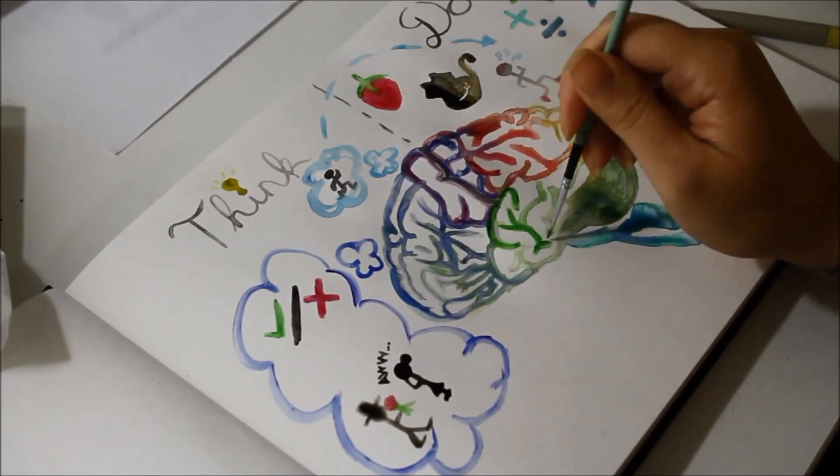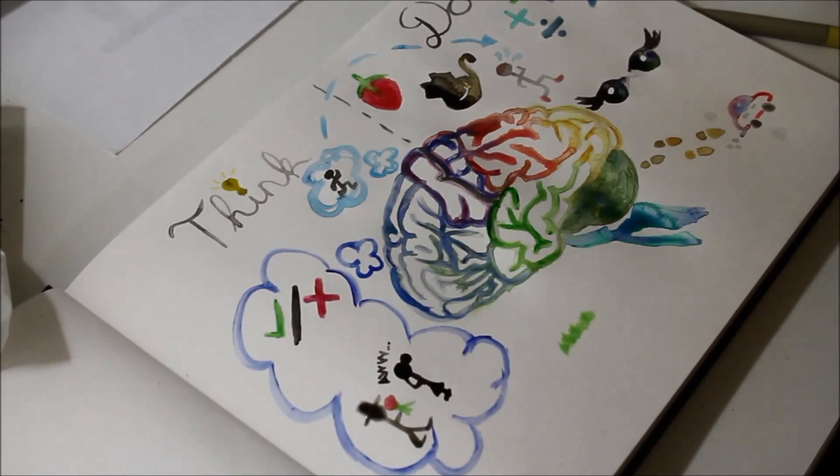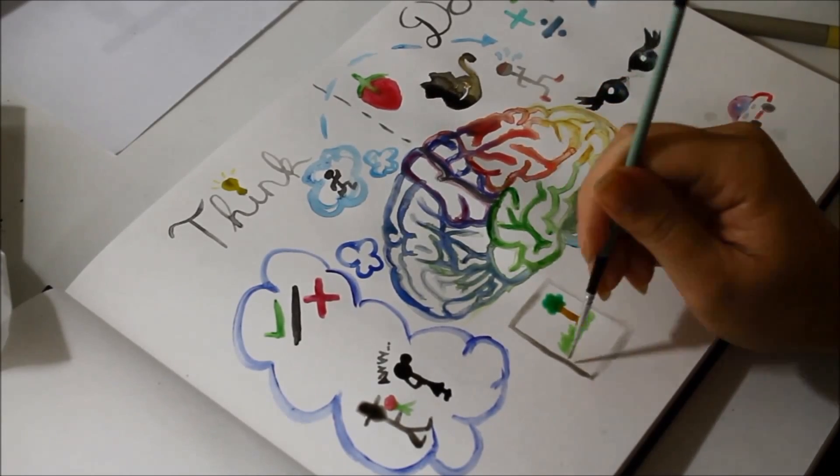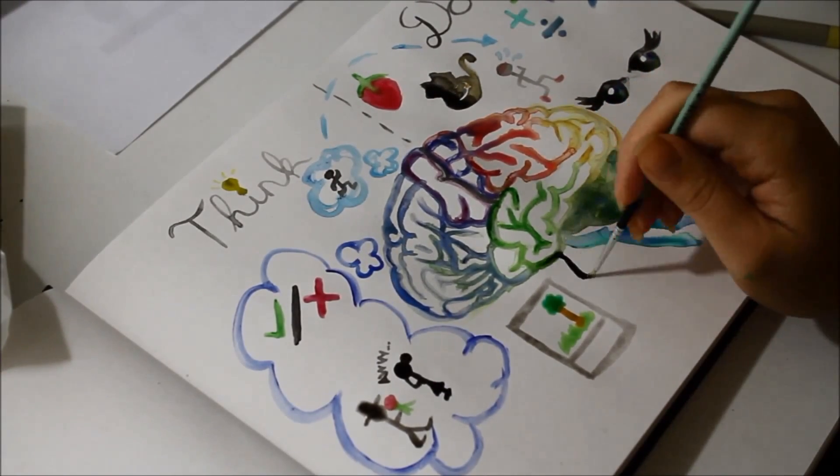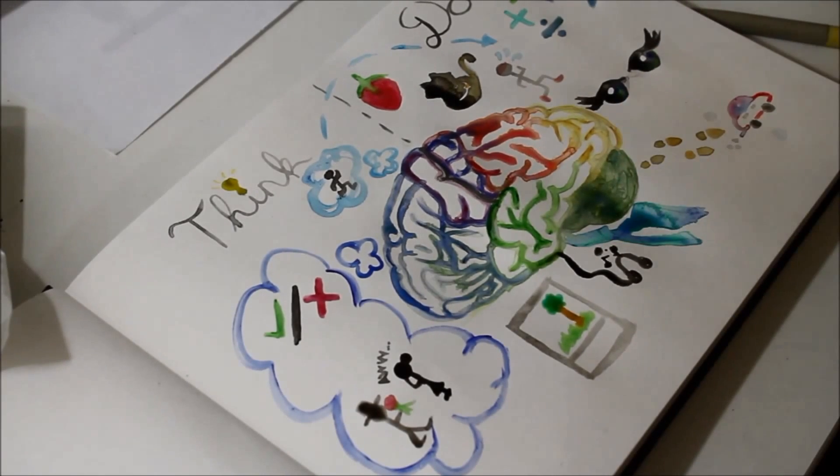The temporal lobe is then a thinker and a doer. Not only does it consolidate which means store our memories in an awesome memory library type of vibe. It also has the auditory cortex which is where we hear and interpret the sounds that we hear.